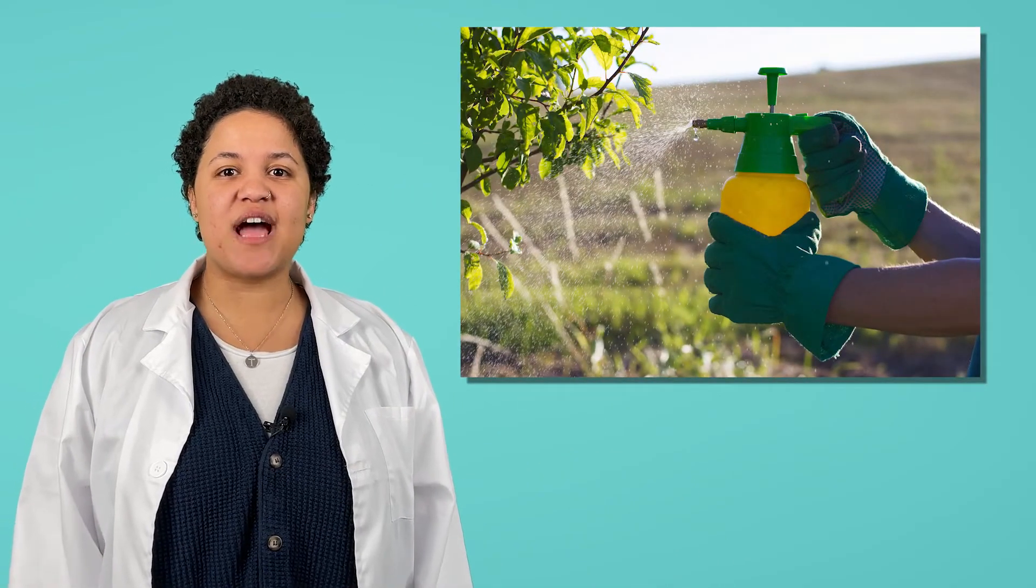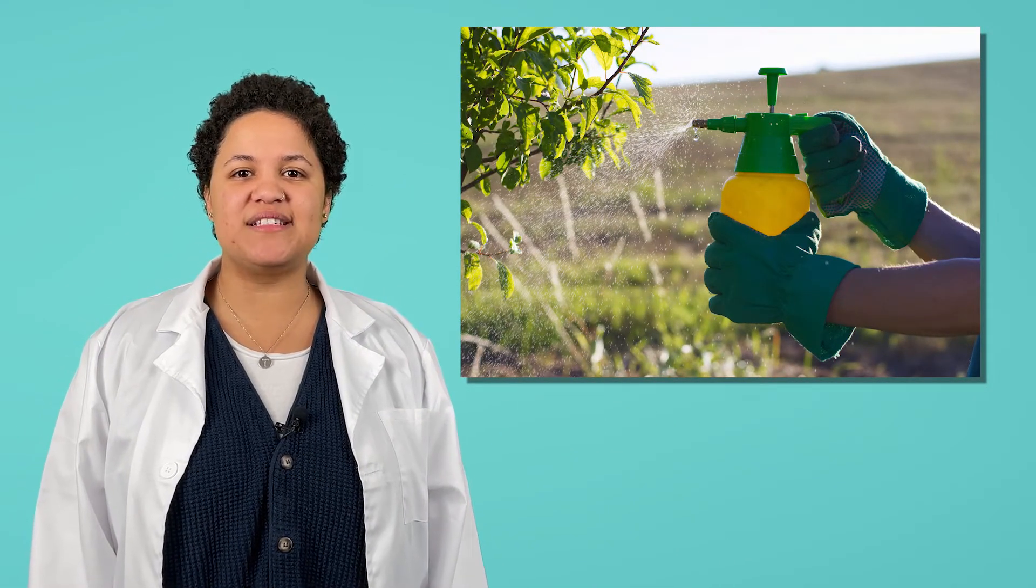Scientists got to work writing hypotheses, creating experiments, and studying the results. After many experiments, scientists created pesticide. Pesticides are a type of chemical that stop animals and insects from eating plants without harming the plant itself. Problem solved.